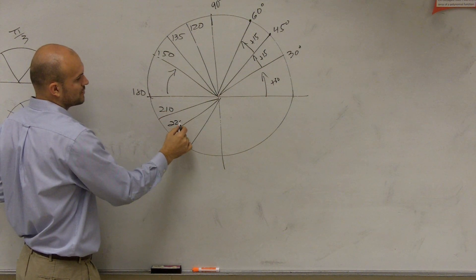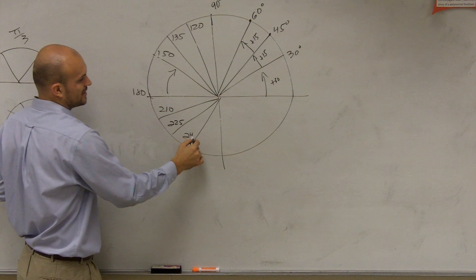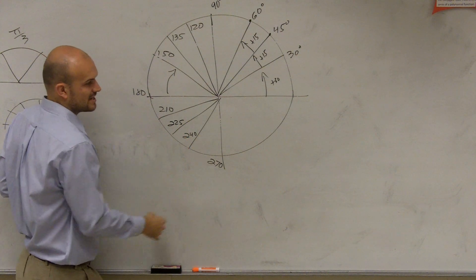Add 15 to that, you're going to get 225. Then you get 240, and then add 30 again, you get 270.